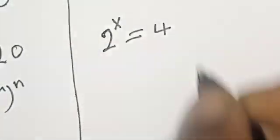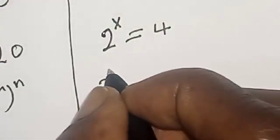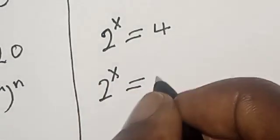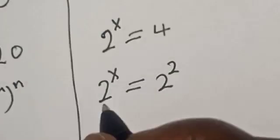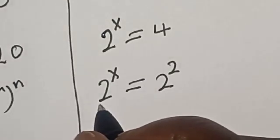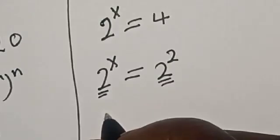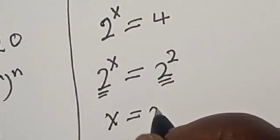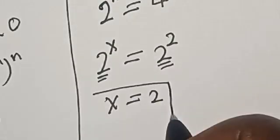From 2 raised to power s is equal to 4: 2 raised to power s is equal to 2 squared. They have the same base, so s is equal to 2. That is the value of s.